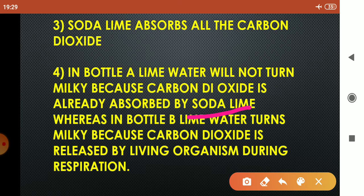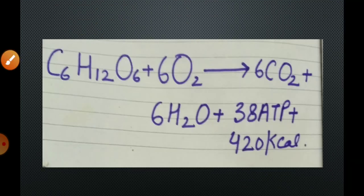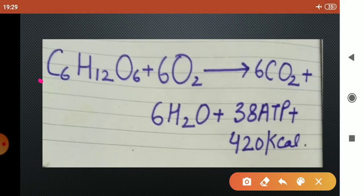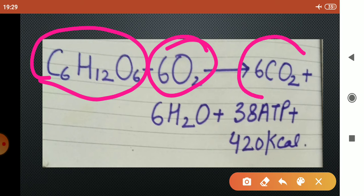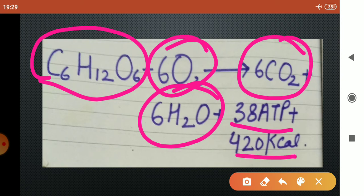The mouse will inhale oxygen and release carbon dioxide that passes through the lime water in bottle B, and that lime water will turn milky. This is the chemical equation of respiration. Glucose C6H12O6 reacts with six molecules of oxygen and we get six molecules of carbon dioxide, six molecules of water, 38 ATP molecules and 420 kilocalorie of heat.